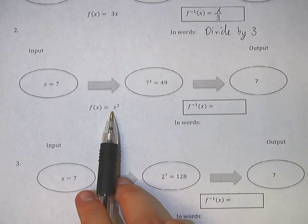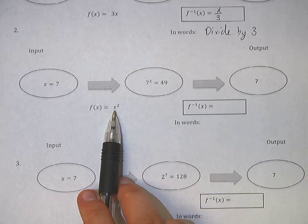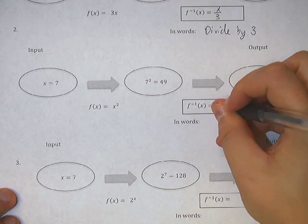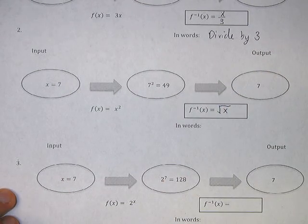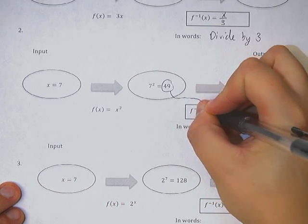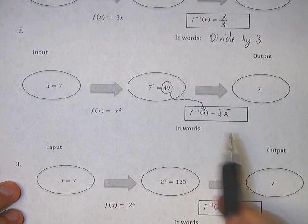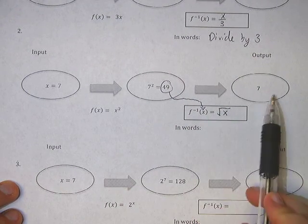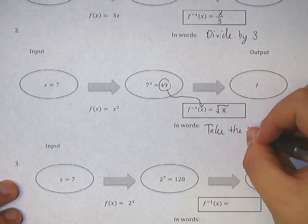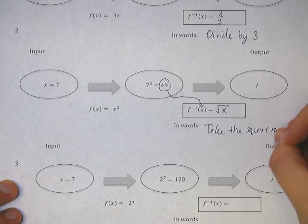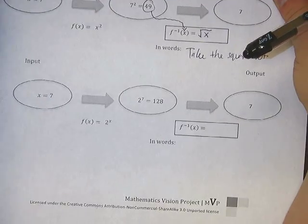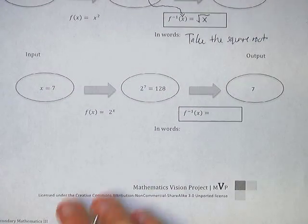Okay. So here's our next one. Our input is 7. Our rule is we square our input. So 7 squared equals 49. If I want to undo a square, I am going to take the square root of it. Now remember, this 49 is going to go right in there. Square root of 49 is 7. So in words, we take the square root.